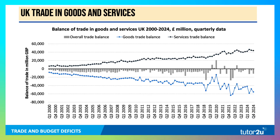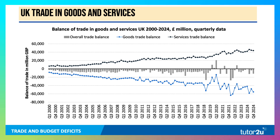We can see that from this chart. Look at the black line showing the net trade surplus in services going up. But the blue line shows the net trade deficit in goods and the gap has widened. Therefore, the UK runs quite a persistent trade deficit.